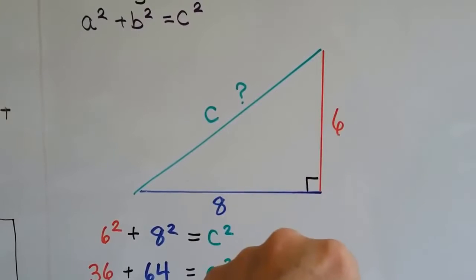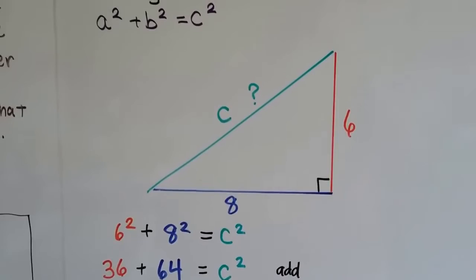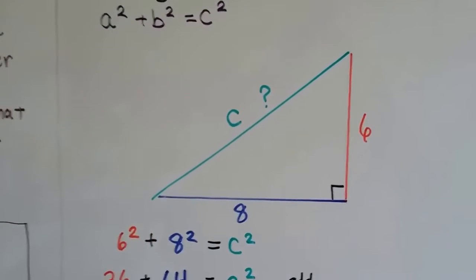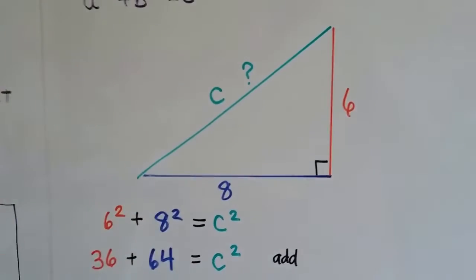but I always have a tendency to make a the shortest side. So that's 6 and b would be 8. If a² + b² = c², we can find this missing measure of c by plugging our numbers into this formula.